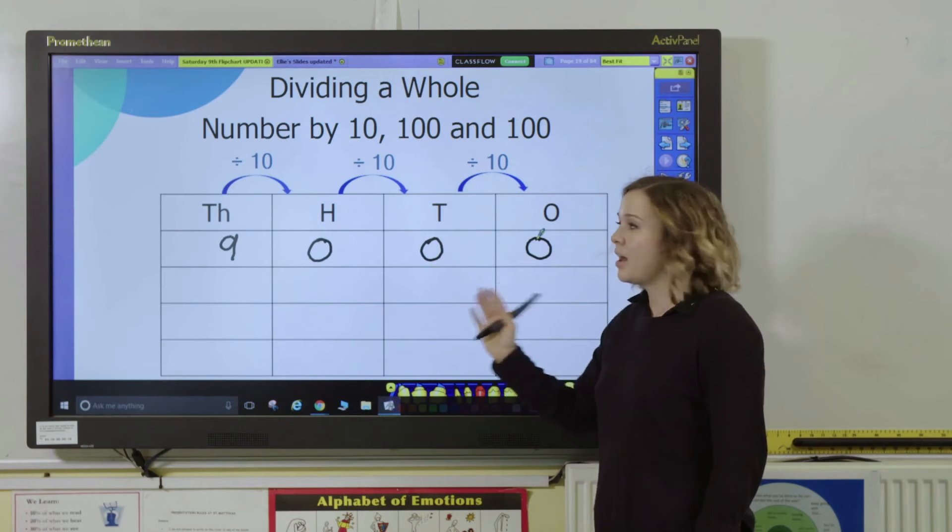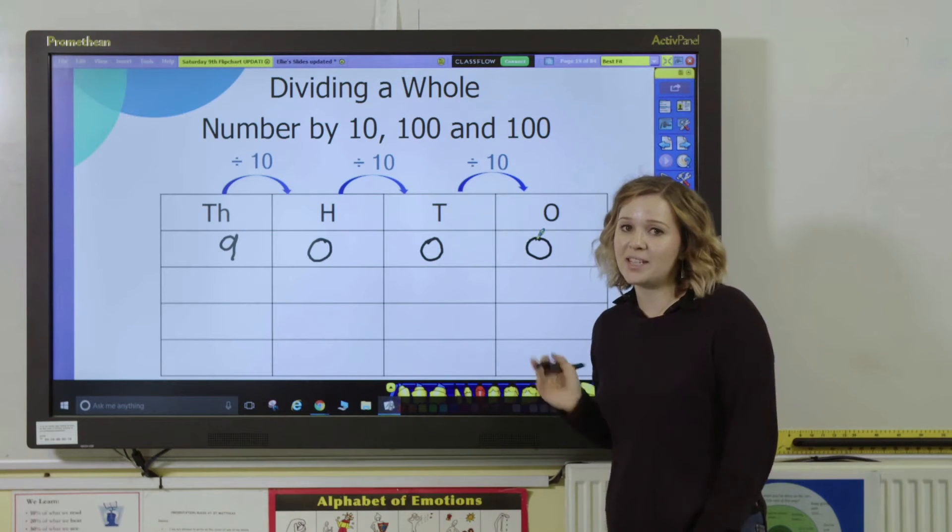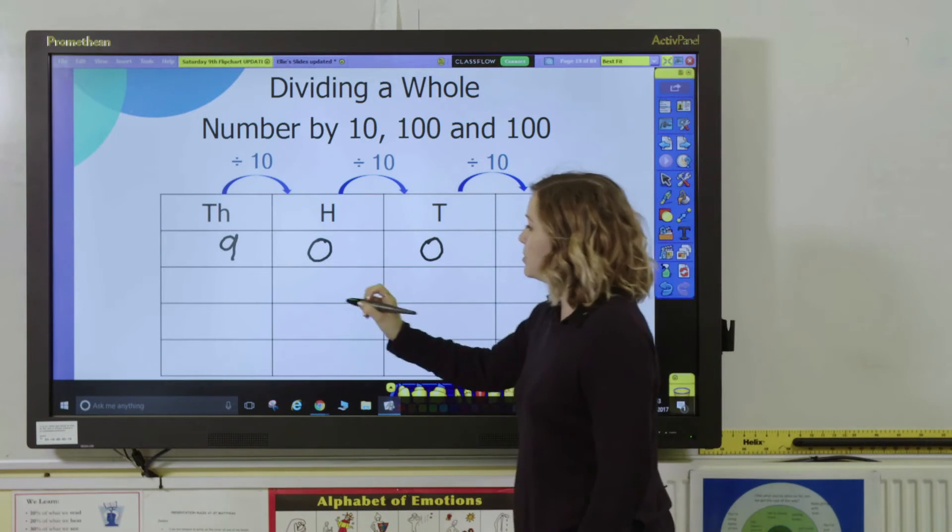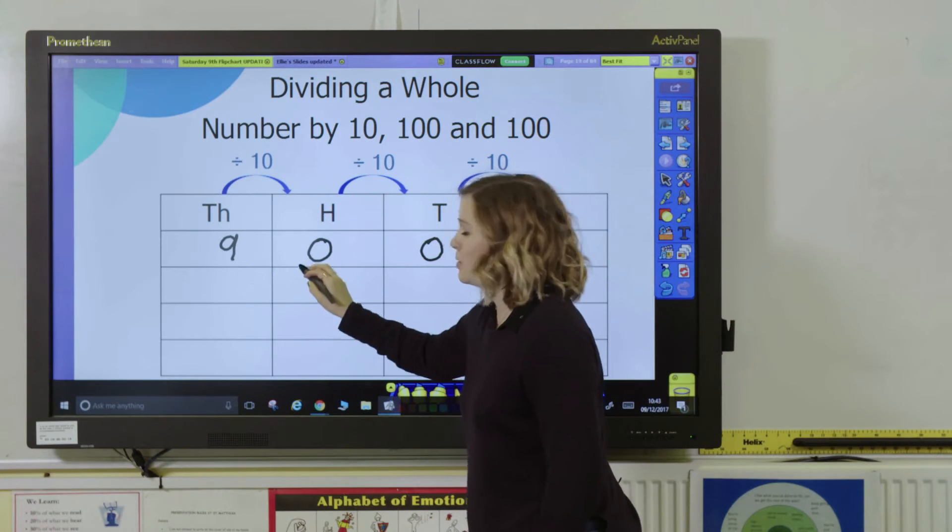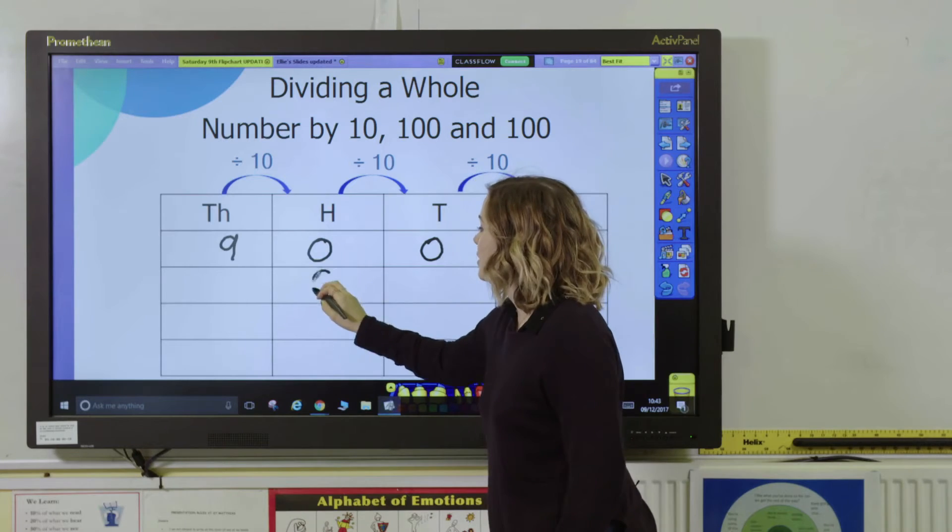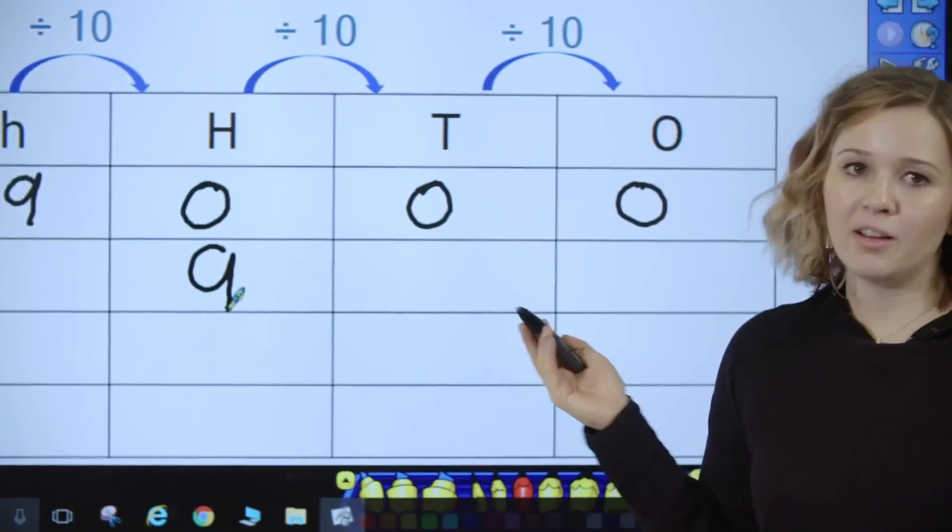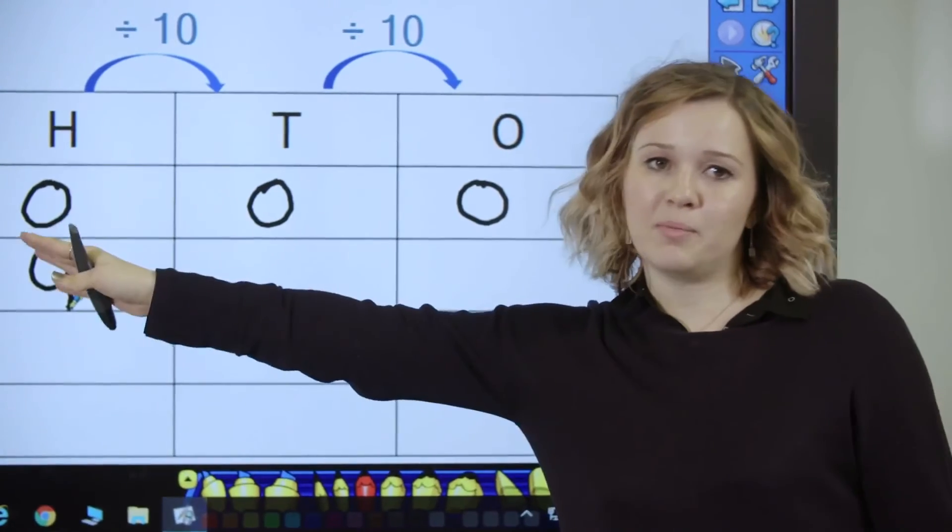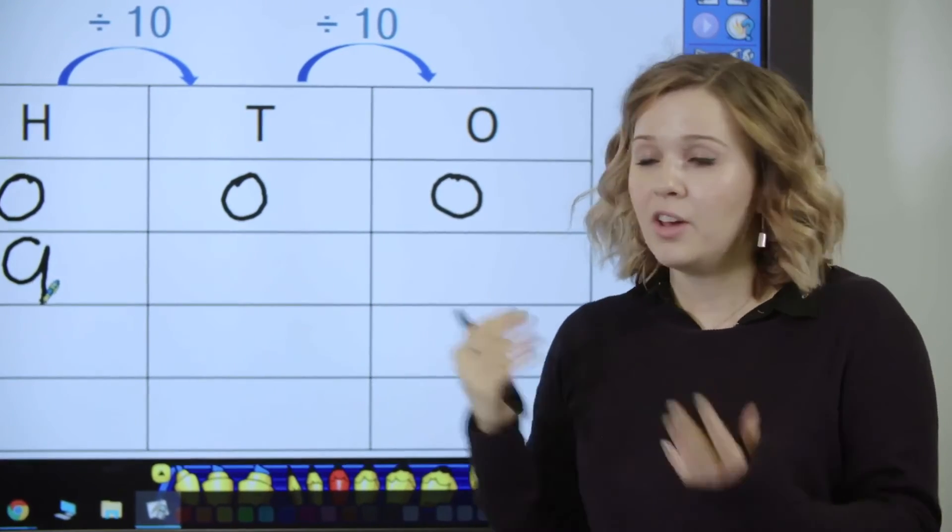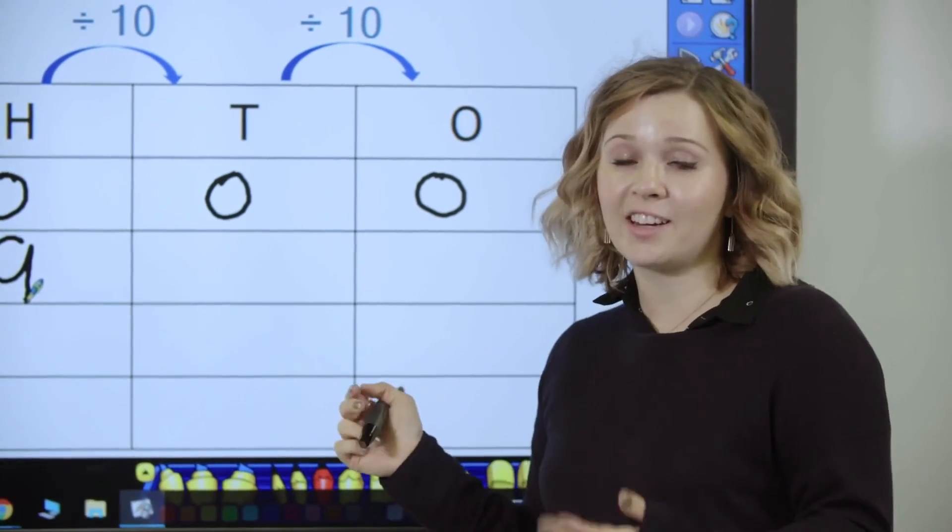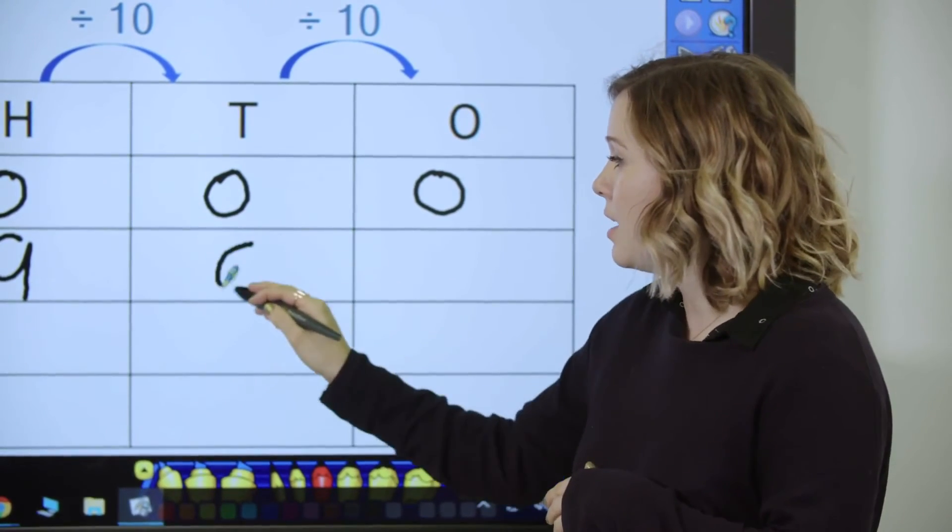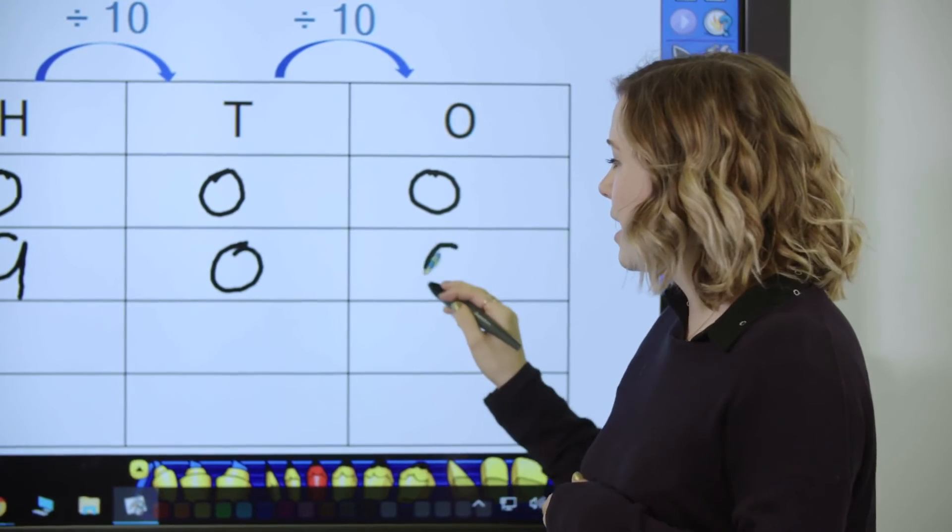So to begin with, if I want to divide my number here by ten, you need your pupils to understand that this is going to move one space to the right. You then might ask them, so is that my number, is it nine by itself, what else do I need to do? And hopefully pupils will recognize that they need to put in a zero as a placeholder in the tens and the ones column.